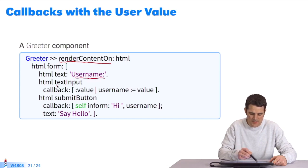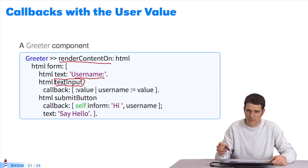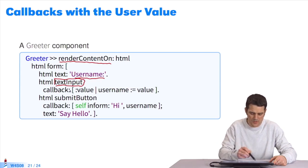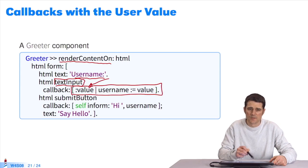The next line is TextInput. That's the text field you saw before where the user writes Bob. I will have one callback. This time, it is a block with a parameter, Value. The value parameter of this block will be the string of characters the user entered.